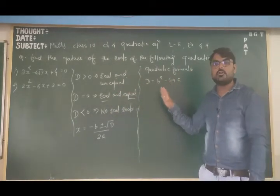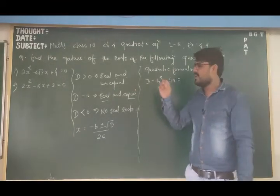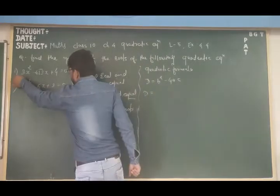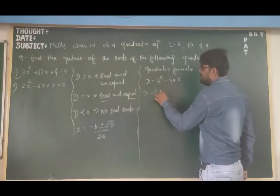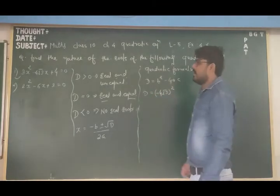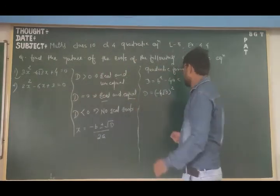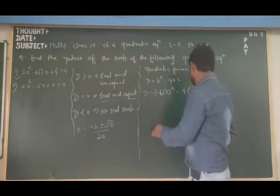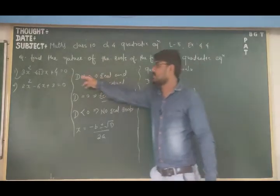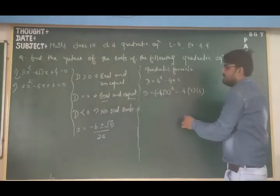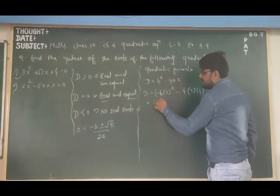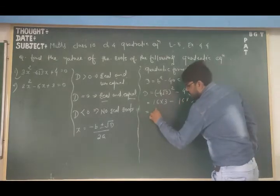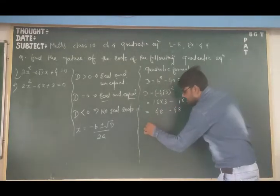From the equation, b equals minus 4√3 (the coefficient of x), a equals 3 (the coefficient of x²), and c equals 4 (the constant term). So D equals (minus 4√3)² minus 4 times 3 times 4. That gives 16 times 3 minus 48, which equals 48 minus 48, which equals zero.